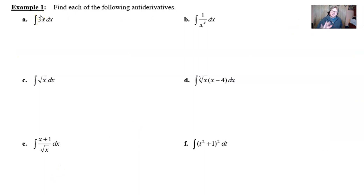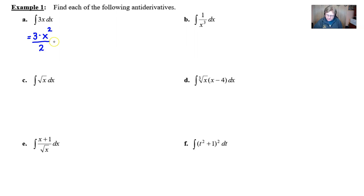Let's look at a few examples. Integrate 3 times x — similar to the one we just did. The 3 comes out in front, and you're just integrating x, which gives x to the 2nd over 2. That's perfectly acceptable. You might also see multiple choice problems that write the coefficient as 3 halves and then x squared. All forms are fine.